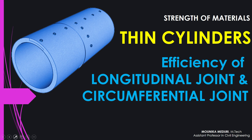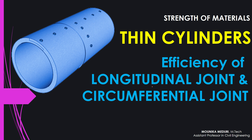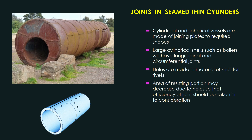Welcome. This is another topic related to thin cylinders: efficiency of longitudinal and circumferential joints. In this video we will see what joints are in cylinders and why we provide them. In the picture you can see a boiler — that boiler is not seamless. Seamless means jointless and very smooth, but for large structures like boilers we cannot manufacture them seamless, so they are seamed — plates are joined together to get the required shape.